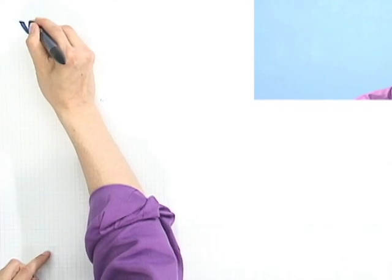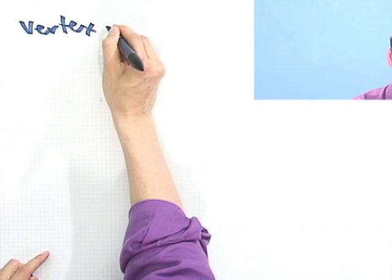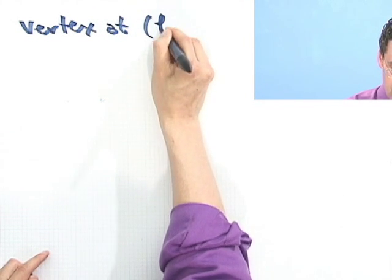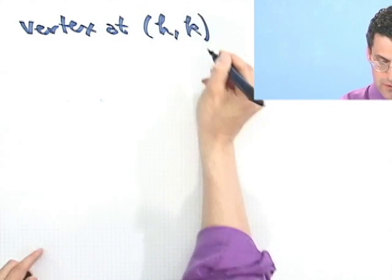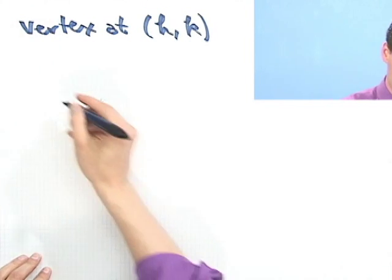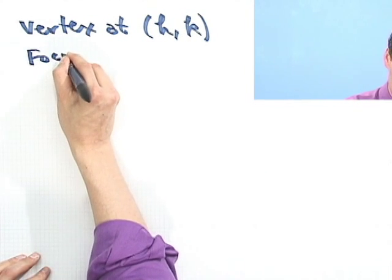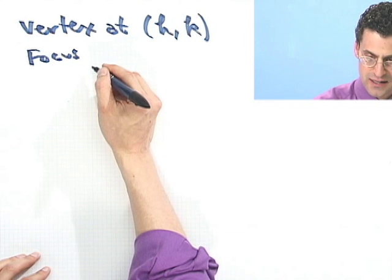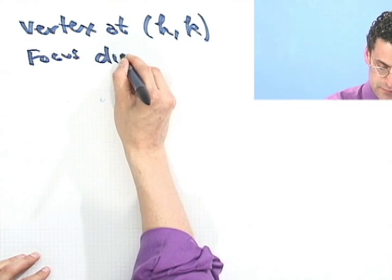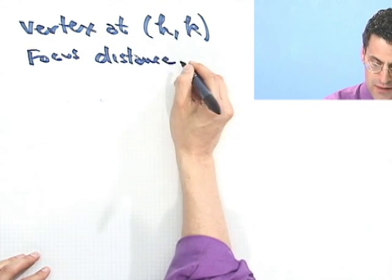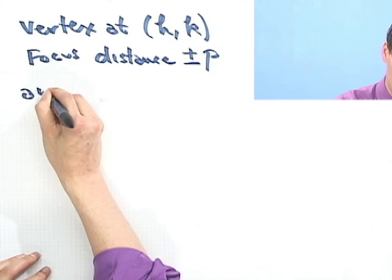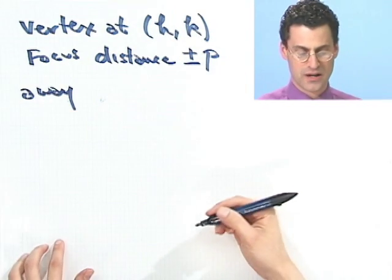Well, so if you have a vertex at (h,k), OK? And your focus is a distance either plus or minus p away, depending upon whether p is negative or not.